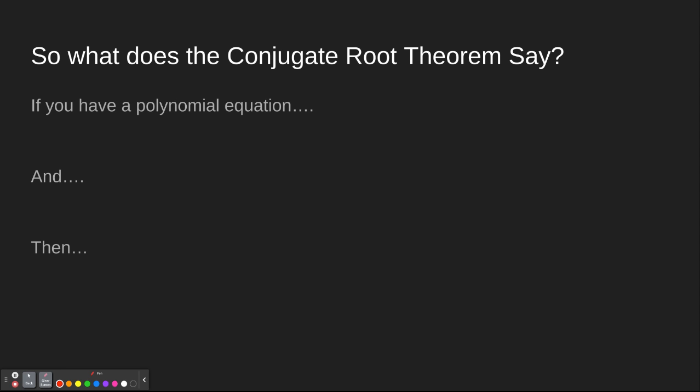So what does the conjugate root theorem say? It says, if you have a polynomial equation, so that's like x to the a plus bx to the a minus 1 plus cx to the a minus 2, dot dot dot. That's just the type of equations we've been having in this whole unit.